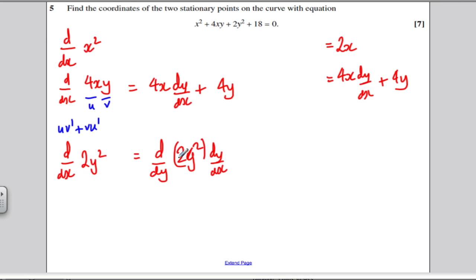The differential of 2y squared is 4y. So, I get here 4y dy by dx. The differential of 18 is 0 and the differential of 0 is 0.